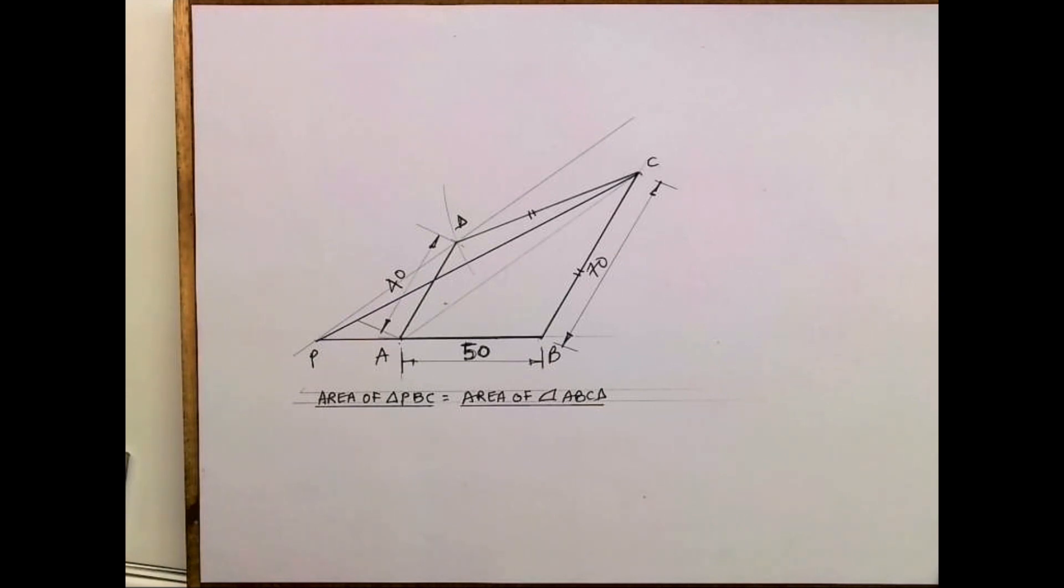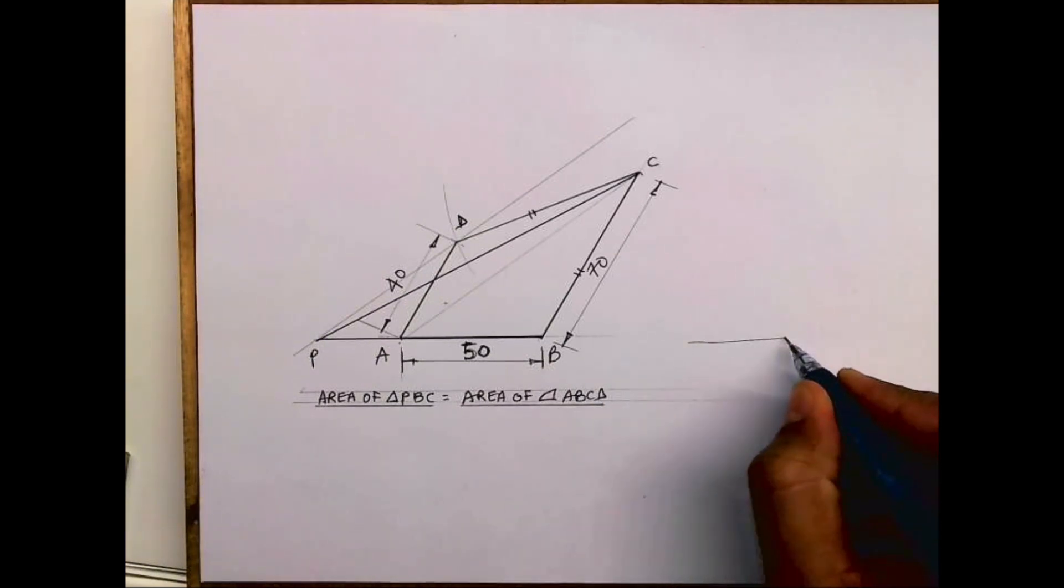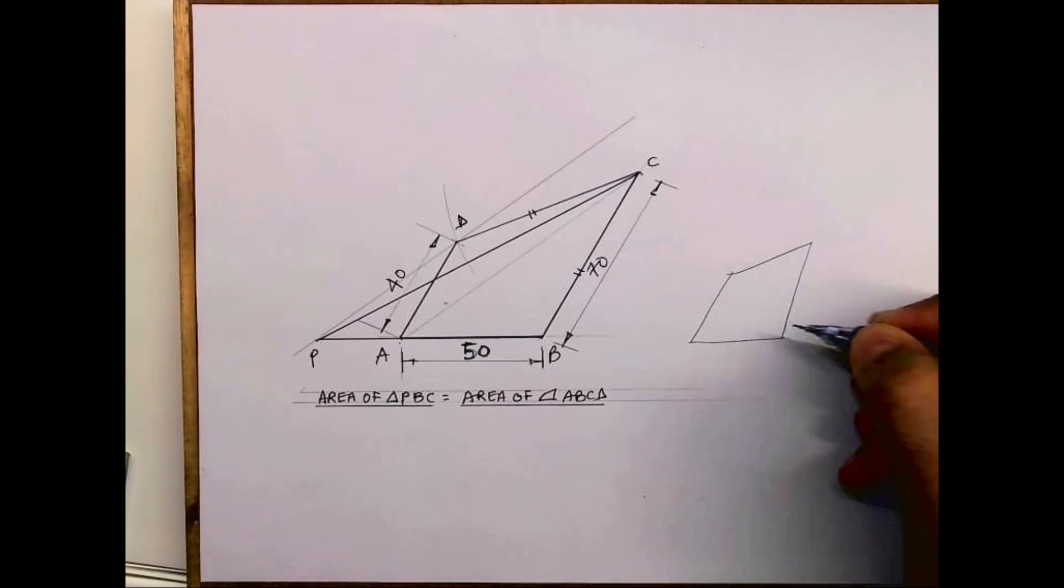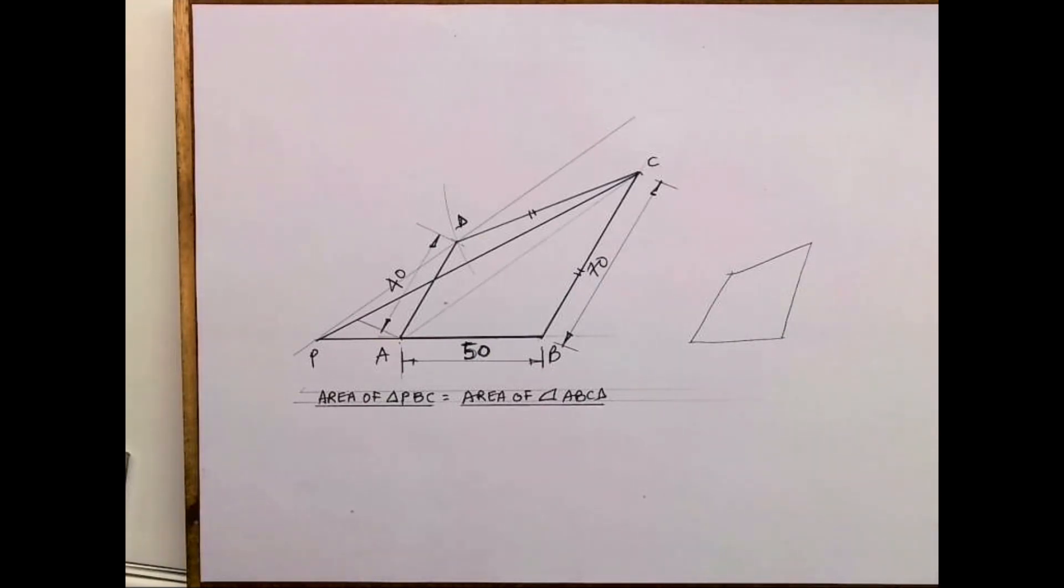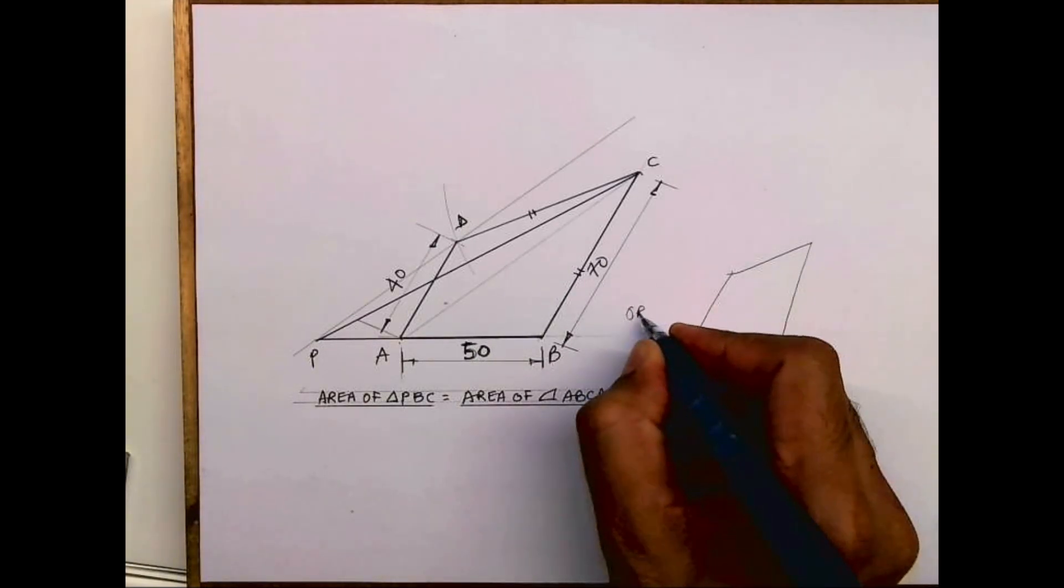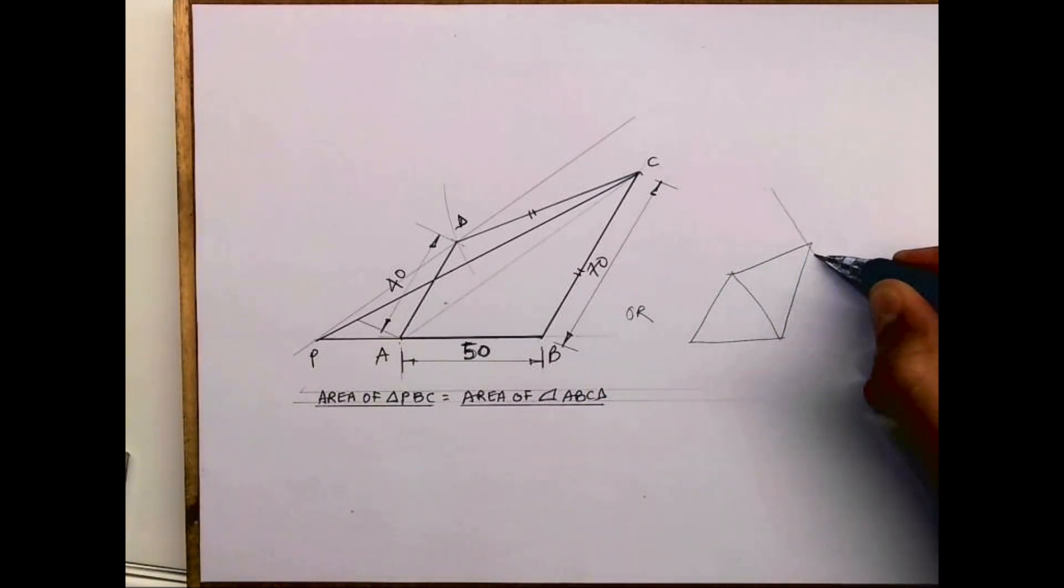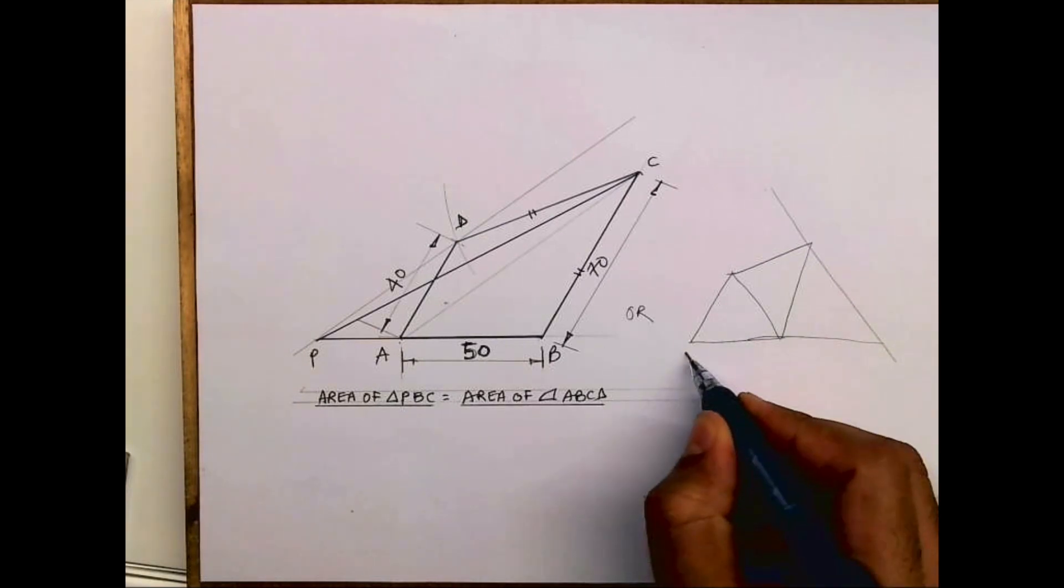Welcome to technical drawing. Today we'll see this sum. Yesterday we did how to convert this quadrilateral into a triangle by this method. Now there is one more method where you join this diagonal and draw a parallel line.